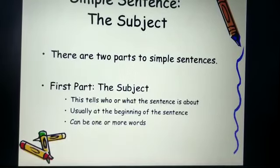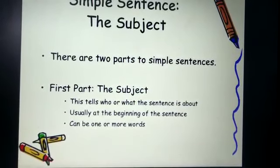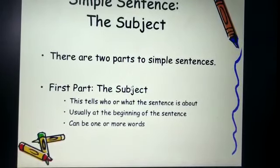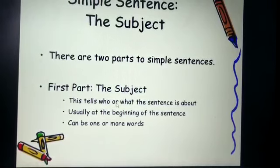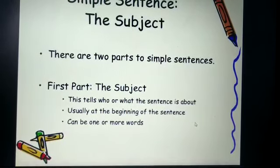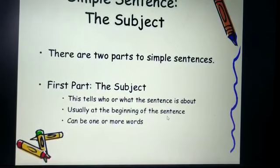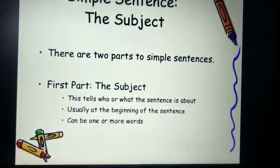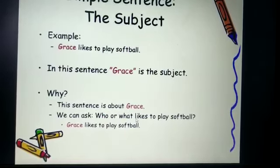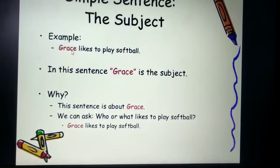Now a simple sentence has two parts. The first one is the subject. The subject tells us who or what the sentence is about. It will usually be at the beginning of the sentence, and it can be one or more words. For example, in the sentence Grace likes to play softball, Grace is the subject.